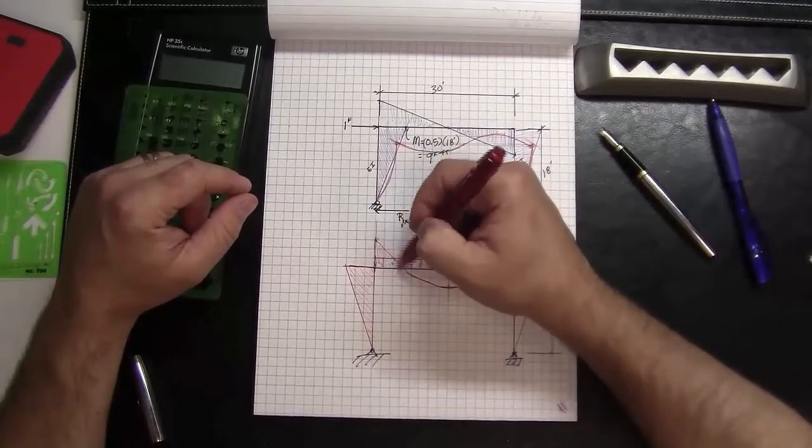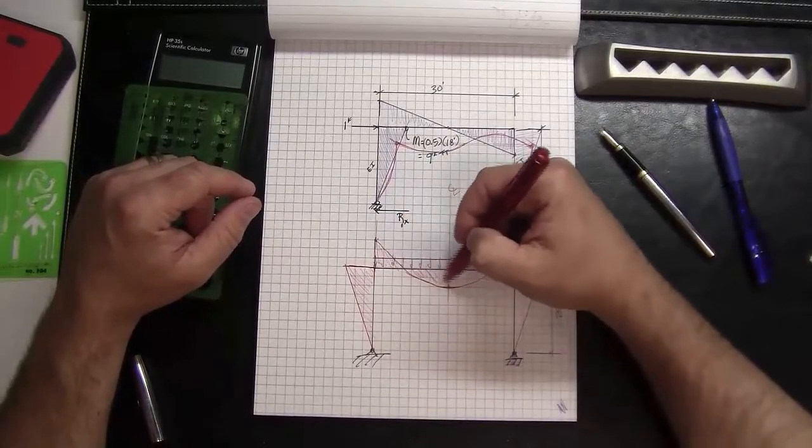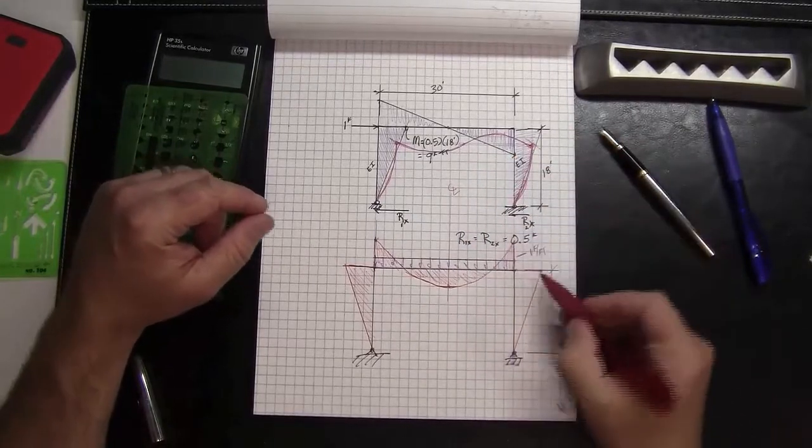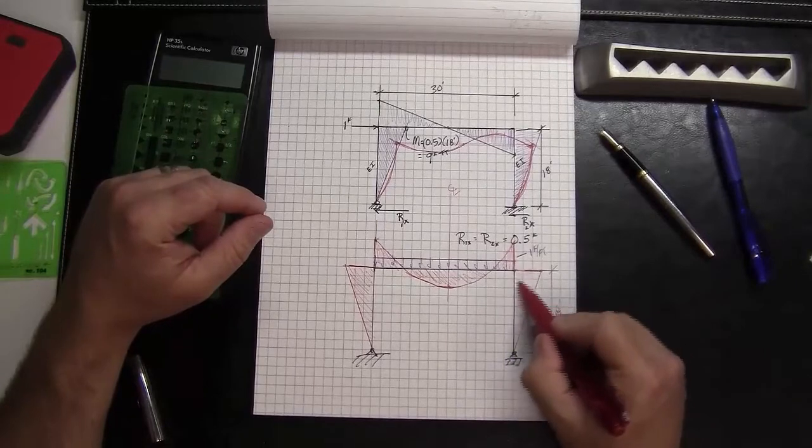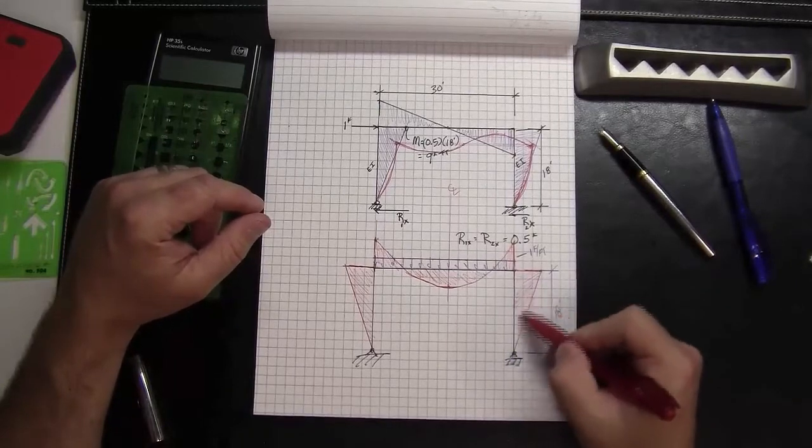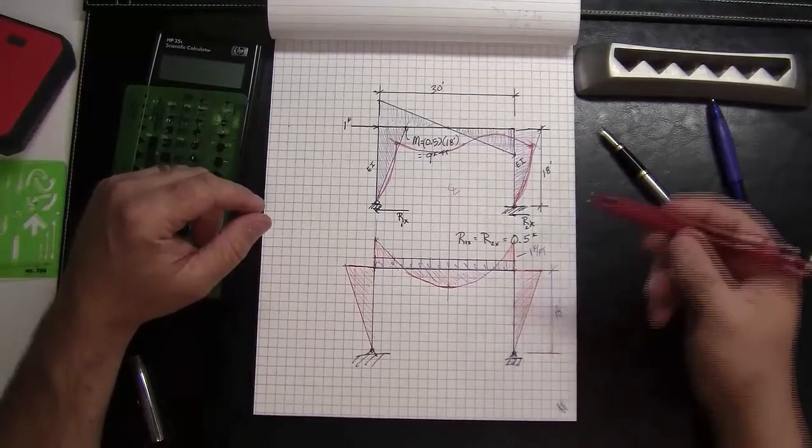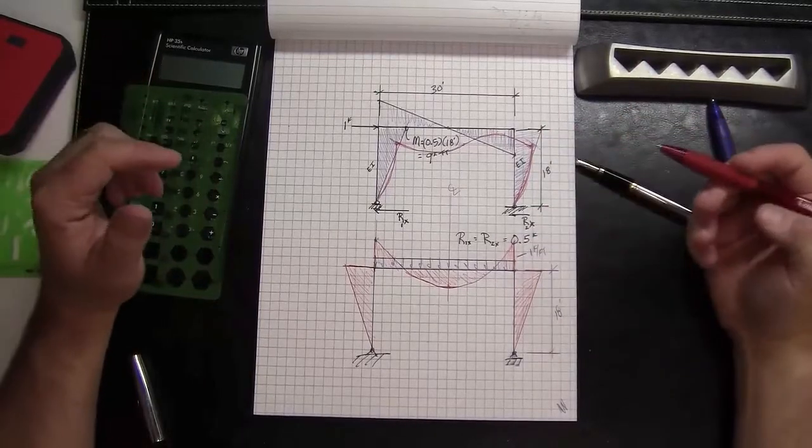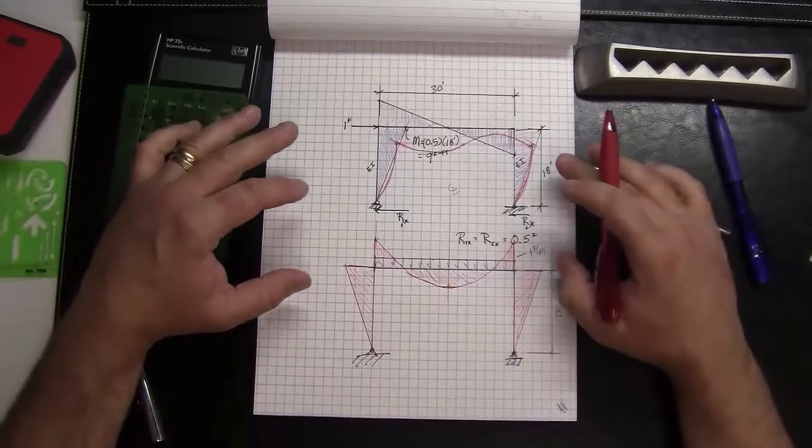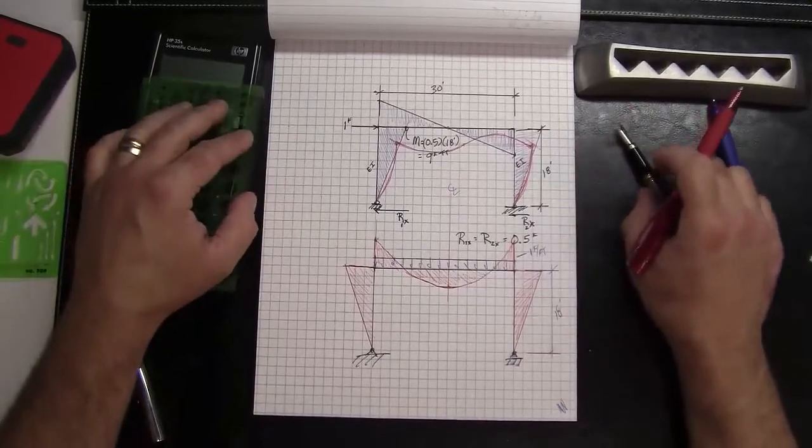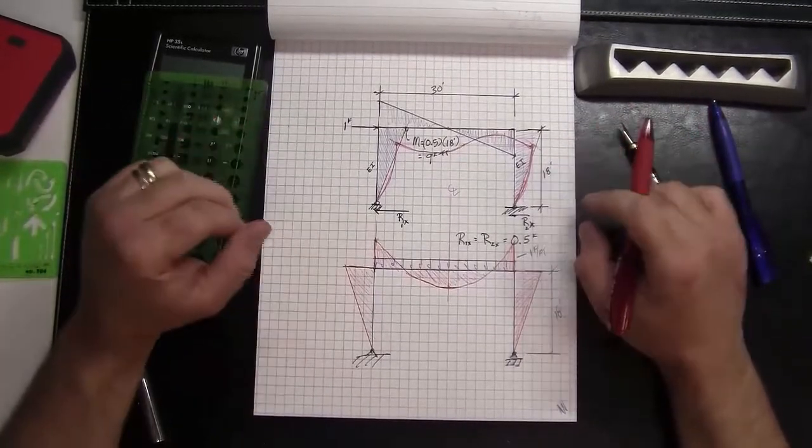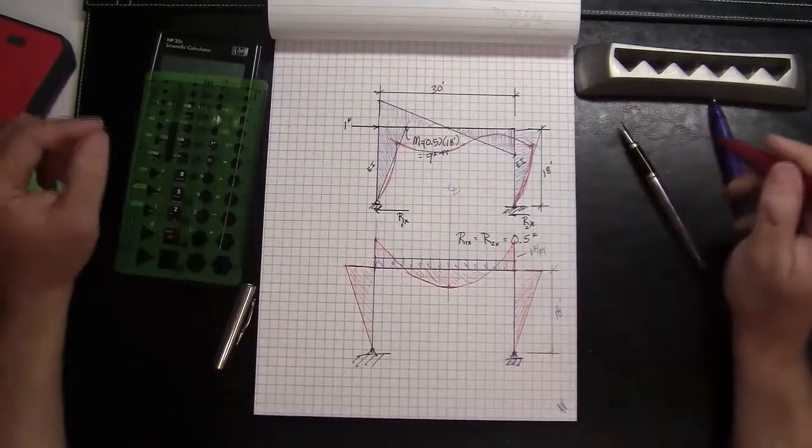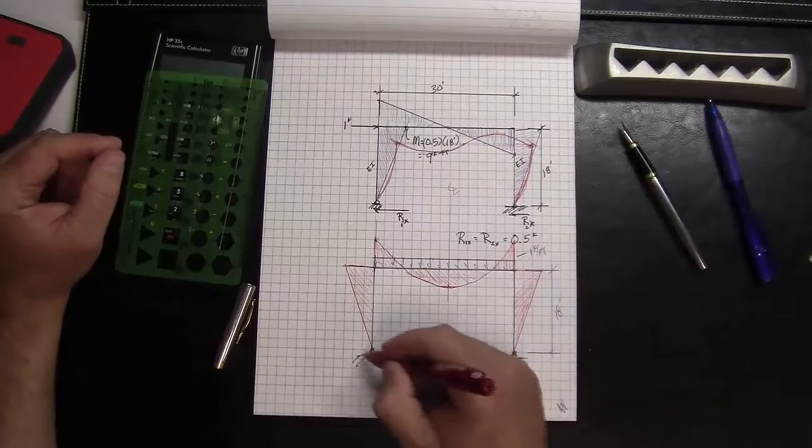I think an important aspect of this is a structural engineer needs to be able to quickly sketch these diagrams. Beyond the practicality of it, this is the same kind of information engineers will need when they're taking their fundamentals of engineering exams. Just what the boards are looking for is that structural engineers have a keen understanding and the intuition of moments, shears, and how stress flows through structures to get to ground.